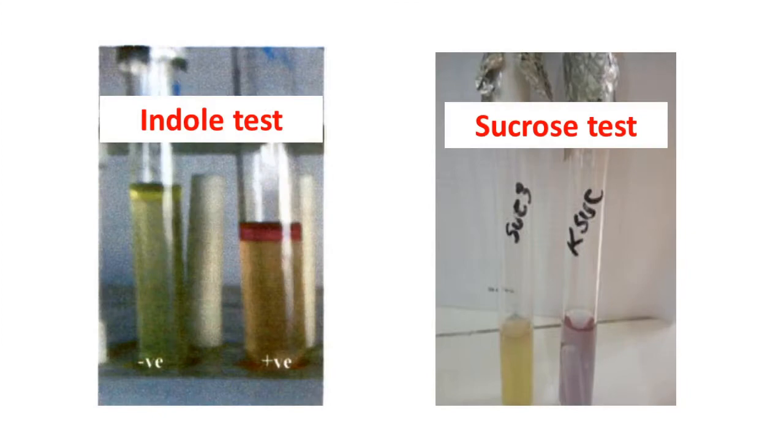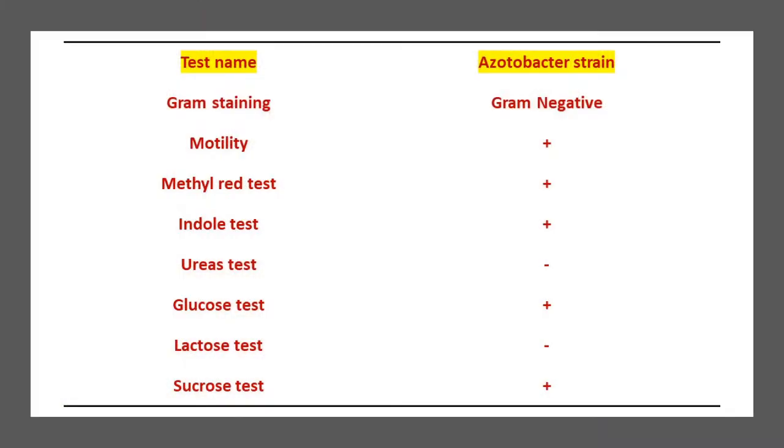Several biochemical tests can be performed with them, including the indole test, sucrose test, and glucose test. They show a positive indole test with a different color ring, and a positive sucrose and glucose test. In a table, we can see that they produce certain tests positive and others negative, consistent with Bergey's manual. For species-level identification, molecular methods — especially 16S rRNA sequencing — can be used.